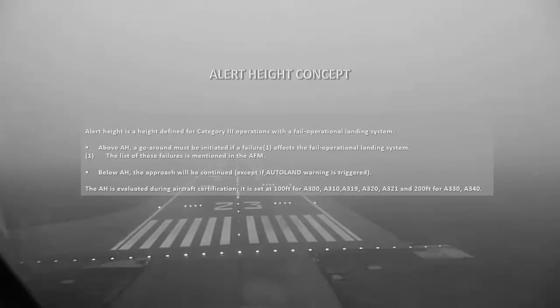Alert height is a height defined for Category 3 operations with a fail-operational landing system. Above alert height, a go-around must be initiated if a failure affects the fail-operational landing system; the list of these failures is mentioned in the Aircraft Flight Manual. Below alert height, the approach will be continued except if an autoland warning is triggered. The alert height is evaluated during aircraft certification: it is set at 100 feet for the Airbus A300, A310, and A320 family, and 200 feet for the Airbus A330 and A340.